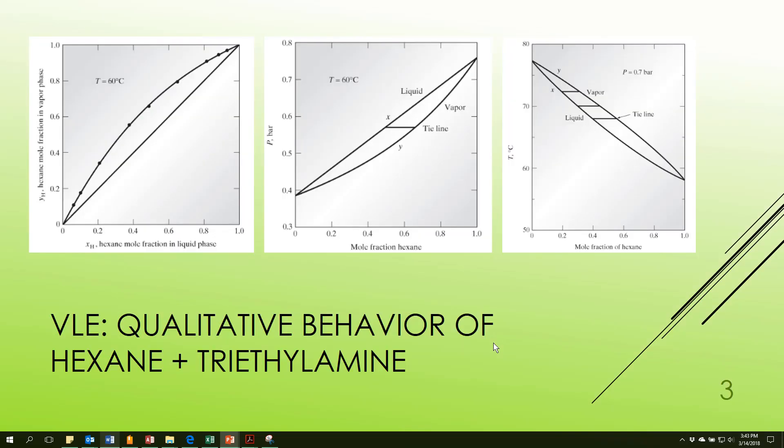So first let's look at the qualitative behavior of a reasonably ideal mixture, hexane plus triethylamine. We have the three types of graphs we typically look at for vapor liquid equilibrium. We have the y versus x diagram where we have the vapor mole fraction plotted against the liquid mole fraction. And we see that this has just a nice arch to it. It does not cross the y equals x line. The y equals x line is not part of the equilibrium. It's just simply drawn in for convenience. It's a tool that's useful for several applications of the y-x data.